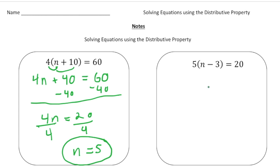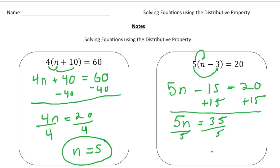Next example. Here we have five groups of n minus three equals 20. So again, I'm going to distribute the five to both the n and the minus three. So that's going to be a five n minus 15 equals 20. And then add 15 to both sides. So that leaves us with five times the number equals 35. And then divide both sides by five. And n's going to equal seven.